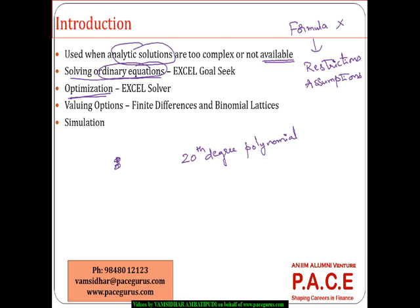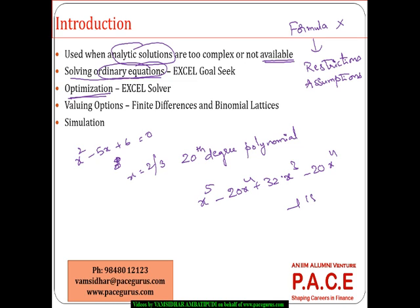Solving ordinary equations — if it is just like x squared minus 5x plus 6 equals 0, I could very well solve for the value of x, saying it is either 2 or 3. But there could be equations like x to the power 5 minus 20x to the power 4 plus 32x cubed minus 20x squared plus 15x minus 7. If I want to know the value of x in this case, it is going to be very, very difficult. These kinds of equations can be solved quite comfortably using numerical methods.